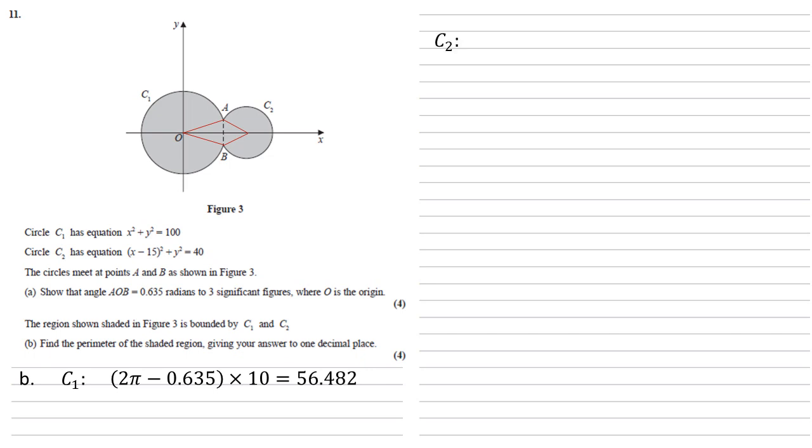We need to do the same thing for C2 now, but we don't know the angle at the middle yet. So we're going to do this in the same way that we've just done for C1.